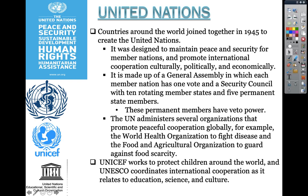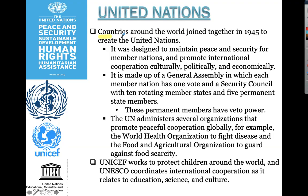The United Nations really started in 1945 at the end of World War II, where countries joined together. It was designed to maintain peace and security for member nations and promote international cooperation culturally, politically, and economically. We have the General Assembly, where each member nation is given one vote. The Security Council has 10 rotating member states and five permanent state members — permanent members have veto power.